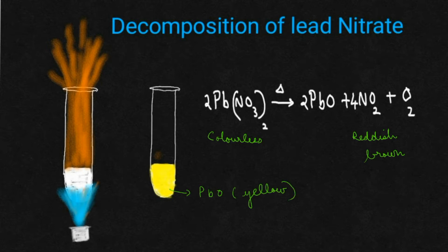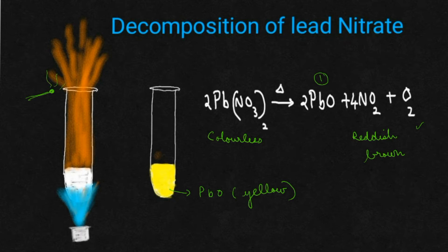Whenever they are asking what will be the observation of the reaction when lead nitrate is heated, one observation you can speak about is lead oxide — a yellow color residue will be formed at the bottom of the test tube. The other observation: a reddish brown gas will be evolved out of the test tube. For the test for oxygen — oxygen is a supporter of combustion — if you bring a glowing splint near the mouth of the test tube, it will rekindle.